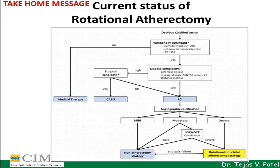But if the SYNTAX score is less — say, less than 22 — PCI angioplasty is comparable to bypass surgery. We need to look at angiographic calcification grading: if it is mild, a non-atherectomy strategy will be useful before stenting. If it is moderate or severe, or if there is any doubt about calcification, we can use IVUS or OCT to quantify calcification. In cases of significant calcification, rotational or orbital atherectomy strategy is recommended prior to angioplasty and stenting.